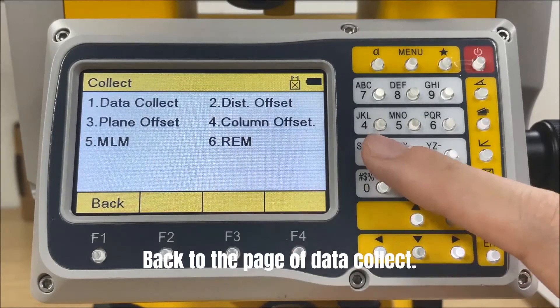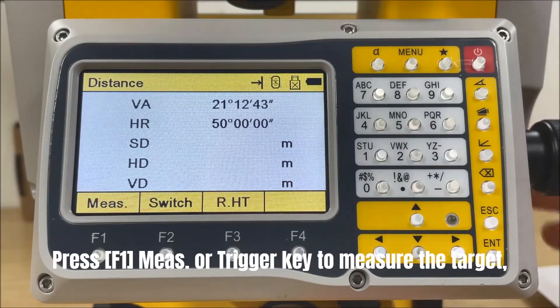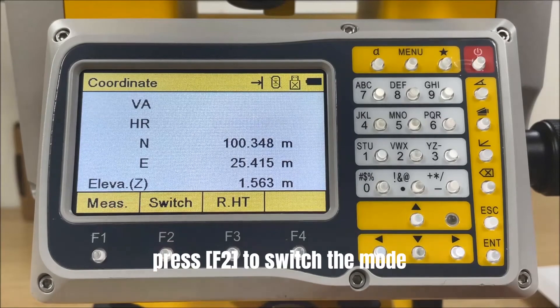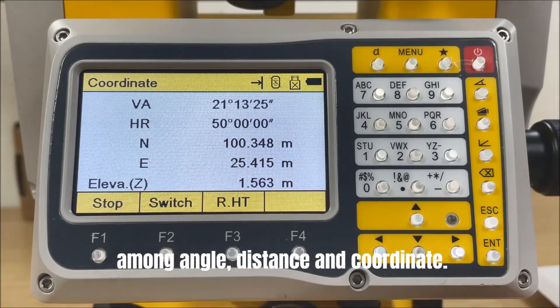Back to the page of data collect. Press F1 or trigger key to measure the target. Press F2 to switch the mode among angle, distance, and coordinate.